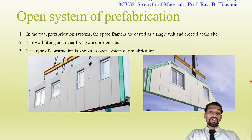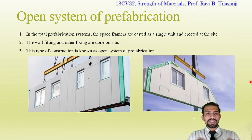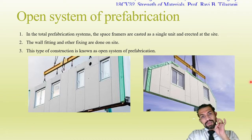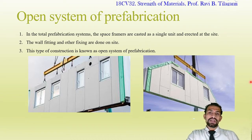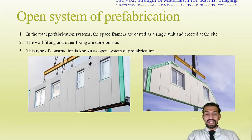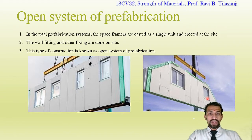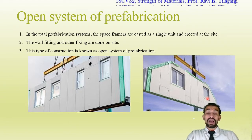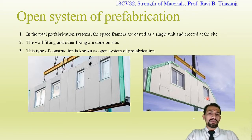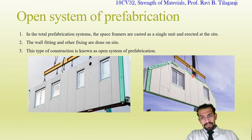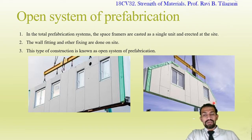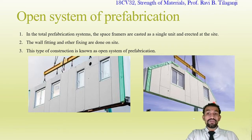Open system of prefabrication: every part is separated. Space frames are cast as a single unit and erected at the site. These three-dimensional space frames have wall fittings and other fixings done on site. This type of construction is known as the open system of prefabrication, where each part is three-dimensional and placed and fixed at the site.